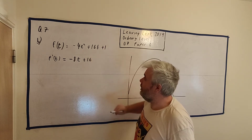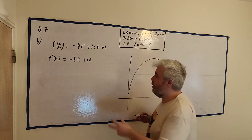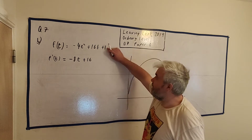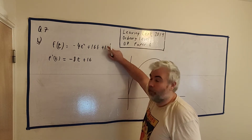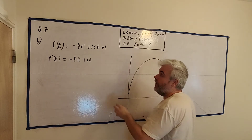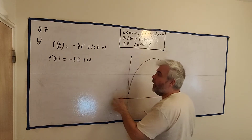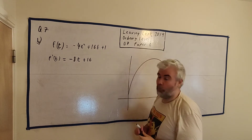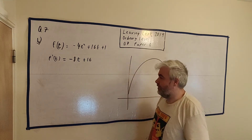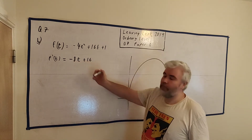Then 1 times 16 becomes 16, and the power of t decreases — t to the power of 0 is 1, or lots of students just remember the t disappears. And the last term: the constant 1 has a t to the power of 0 already, so that 0 multiplies by 1 and becomes 0 — it disappears. A better way of thinking about it: it's a constant, so when t moves, nothing happens to 1. The full answer for D part 1 is f'(t) = minus 8t plus 16.